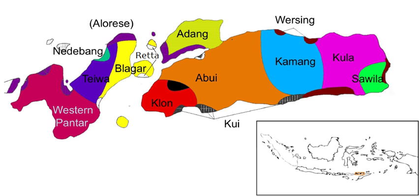Phonology. Vowels. Blagar has five vowels, with a sharp contrast between short and long vowels.